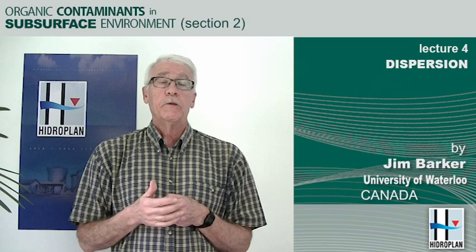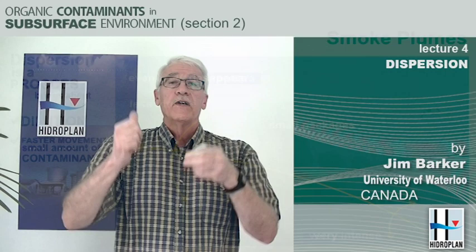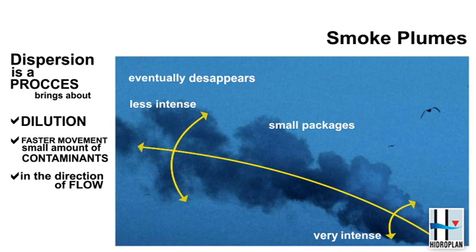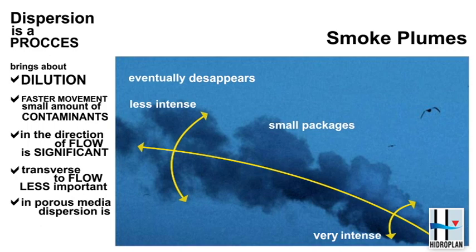What you note about these plumes is that dispersion seems to be only in the direction of flow — the plume of smoke doesn't get much wider as it moves along. So in the direction of flow dispersion is a significant process, but transverse to flow it may not be as important as we might hope. The difficulty is that in porous media dispersion is actually weaker than it is in air. In air we have turbulent flow so mixing of contaminated air with clean air is faster, but in groundwater the porous media inhibits this.